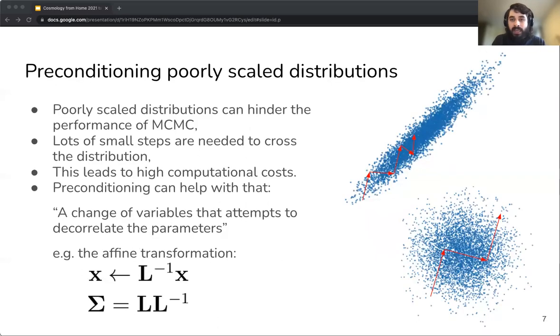Now the local nature of MCMC means that poorly scaled distributions can hinder the sampling performance of MCMC, meaning that many more smaller steps are needed to cross the distribution thus increasing the computational cost of the method. This becomes better understood by looking at the plots on the right. The elongated stretched shape of the top distribution makes it harder to sample compared to the spherically symmetric distribution at the bottom. Fortunately there is a way to transform the first distribution on top into the second at the bottom and thus simplify the problem of sampling from those distributions. In this example, the simplification is done using an affine or linear transformation.